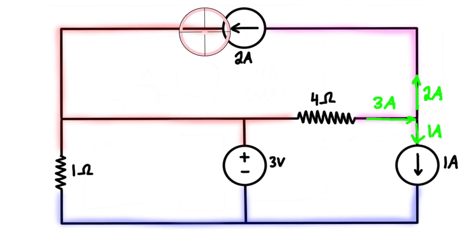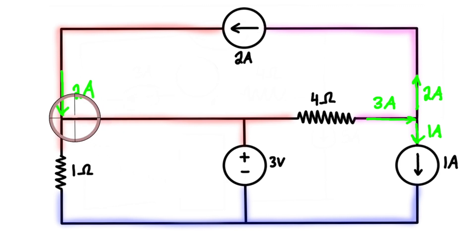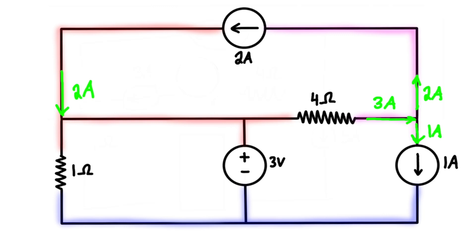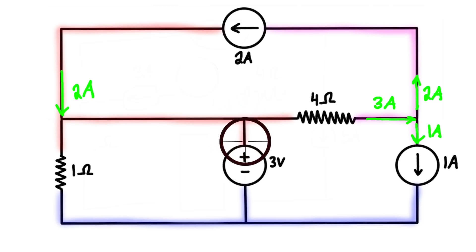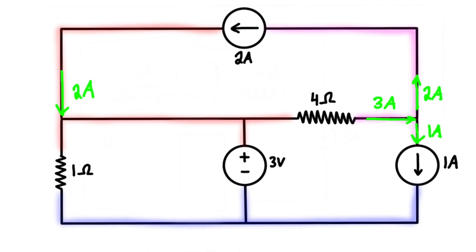Looking at another junction, we have two amps flowing in because of that current source. When we look at the other two branches, it's not immediately clear how much current is flowing in or out. It appears we have too many unknowns, but we can use the knowledge given to us by the voltage source. The voltage source ensures the positive terminal is three volts higher than the negative terminal. Since the positive terminal connects to the red node and the negative terminal connects to the blue node, there is a three volt drop across the resistor going from red to blue.